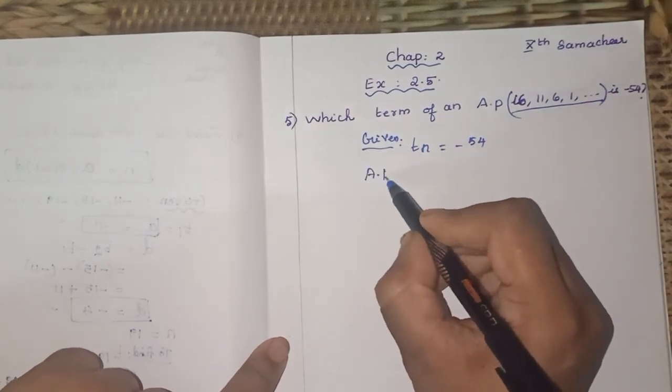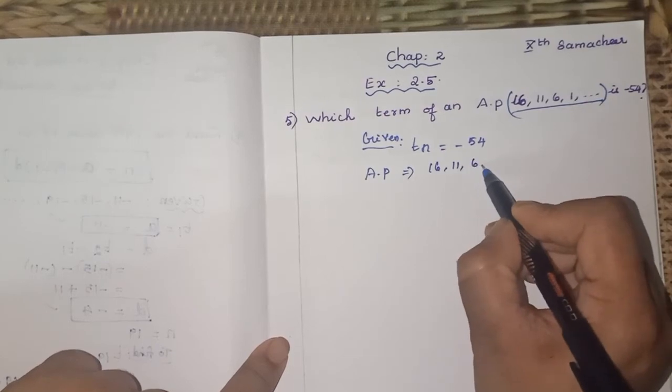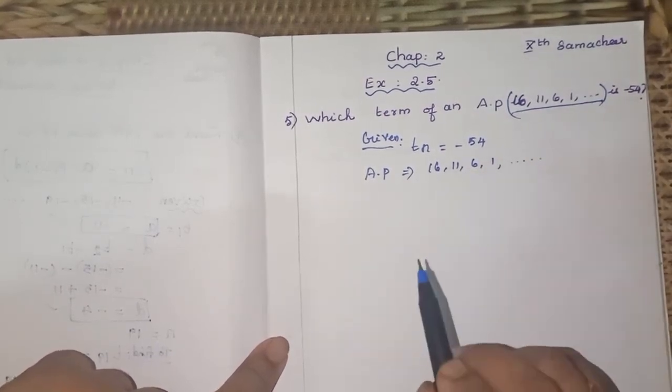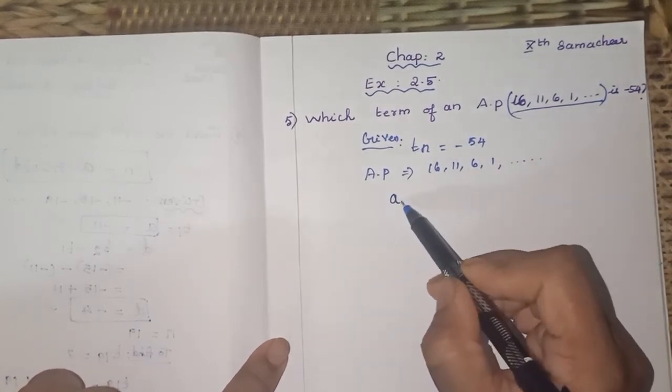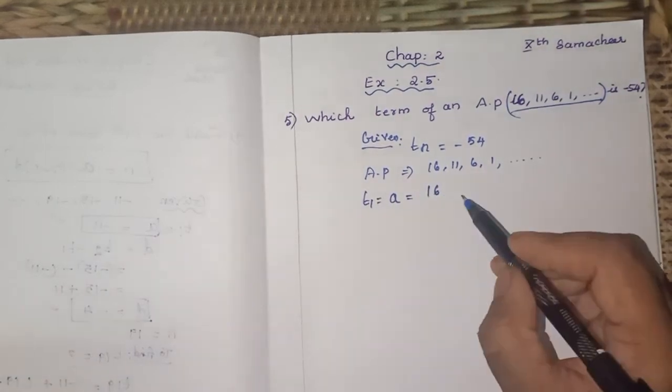So T_n we have to take it as minus 54. You can write down the other data from the question. What is our AP sequence? It is given as 16, 11, 6, 1, it goes on. What is the first term? A, that is our T_1, 16.